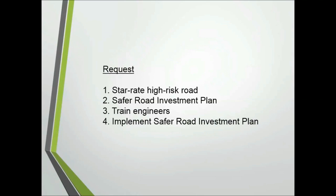So let's say you get a meeting. What do you want your government to do? Number one: request that they star rate a high-risk road or road design of at least 50 kilometers in length, and that a safer road investment plan be written based on the assessment. The plan will list features to bring the road up to a three-star or better rating for all road users. We suggest also proposing a three-day workshop introducing engineers to IRAP's road assessment methods and software. These things can be done for a budget of about $50,000, though the actual amount will vary depending on the road's characteristics.